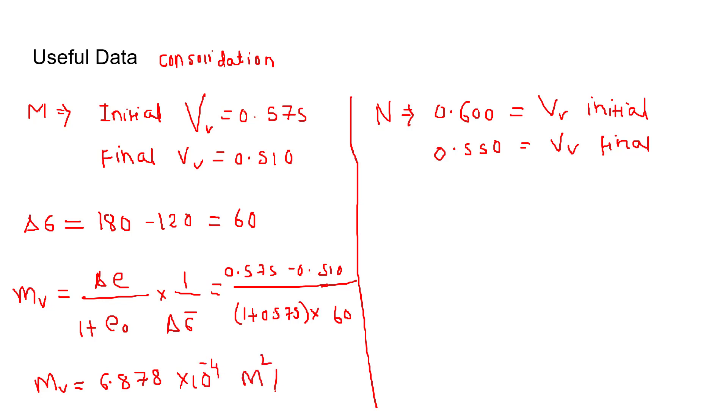Similarly for sample N, mv equals to - here also the delta sigma dash is 60 kPa, same. So it will also become 0.6 minus 0.55